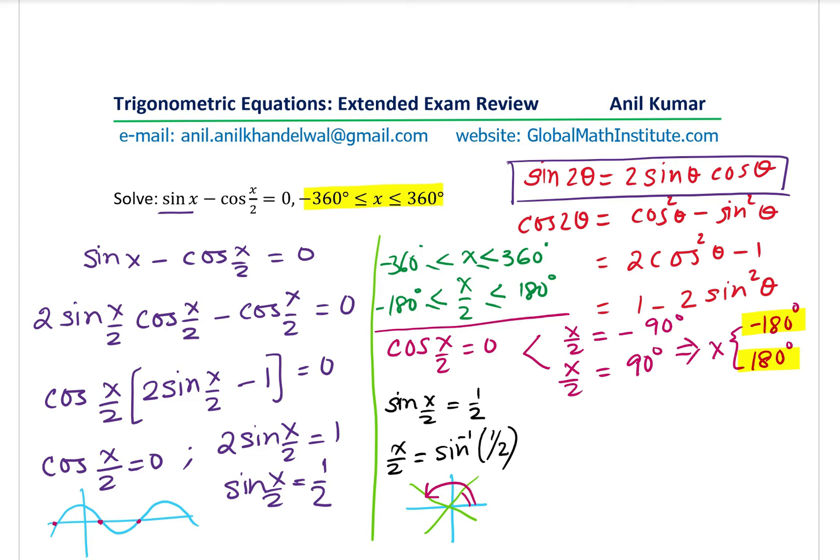So these are the two solutions which you get and I could write here as x by 2 equals 30 degrees or 150 degrees, which is 180 minus 30. And then we get the value of x as 2 times, which is 60 degrees and 2 times will give us 300 degrees.